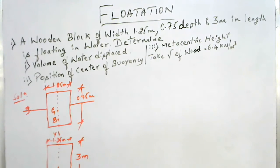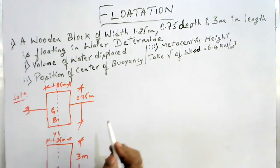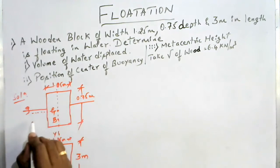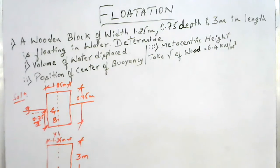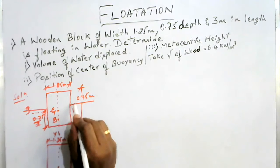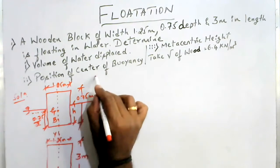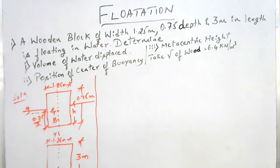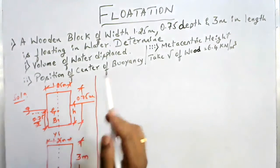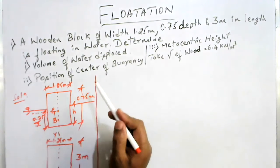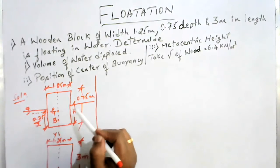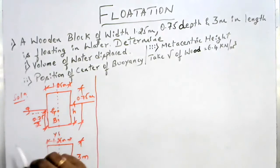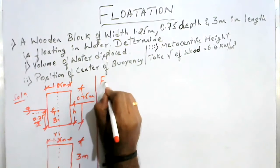Since the block is rectangular in shape, the center of gravity is at 0.75 divided by 2 — that distance on either side, because it is rectangular in nature. The depth of immersion is not known; let me take this depth of immersion as h. Now he has asked us to find the volume of water displaced. To find that, I need to find the depth of immersion h, because volume of water displaced equals volume of the immersed part of the body — as we discussed in previous lectures.